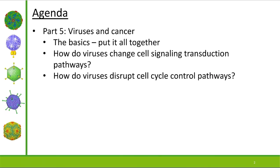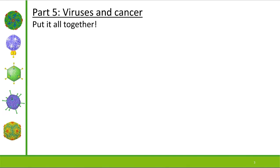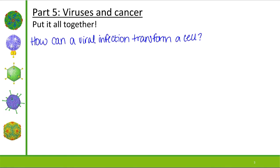What we're going to do today is pick up with part five, which is all about viruses and cancer. In parts one through four we've chunked out information, and today we're going to see how all of it comes together. We're going to start by both asking and answering a question: how can a viral infection transform a cell?